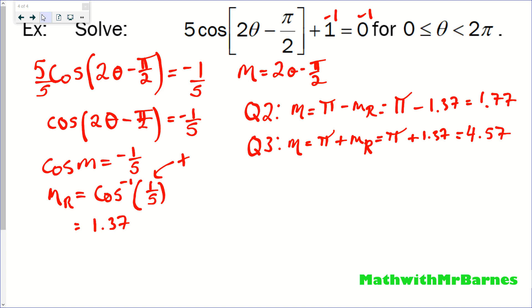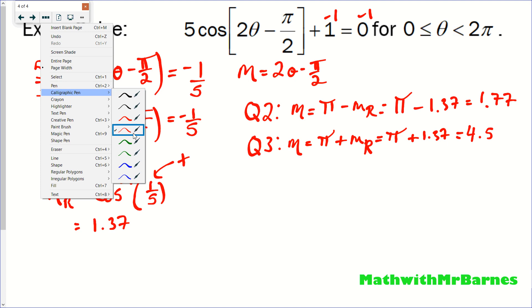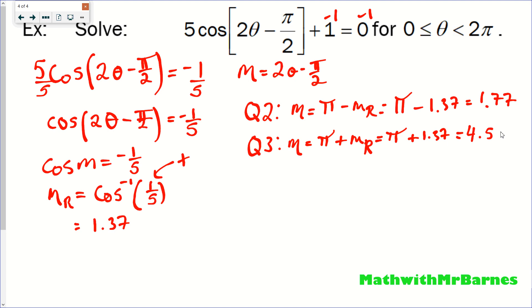Now what we need to do with those things is go ahead and solve for my actual value of theta. Theta is hidden in that mess up here, 2 theta minus pi over 2. So I'm going to take each one of those values for M and sub it in here for M to solve for theta. Because theta is the solution I want. I'm trying to solve for theta in the original question. So, 1.77 equals 2 theta minus pi over 2. So I'll do this exact same steps as you would solving a linear equation. Try to get the theta by itself.